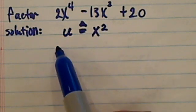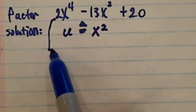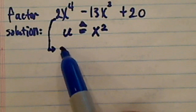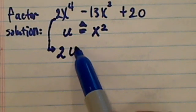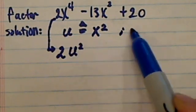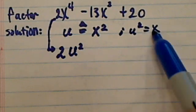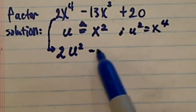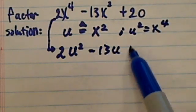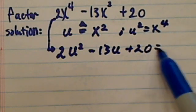The reason we want to do that is we want to transfer the first equation into a quadratic equation. So this becomes 2u squared, because then u squared here is equal to x to the fourth. 2u squared minus 13u plus 20 is equal to 0.